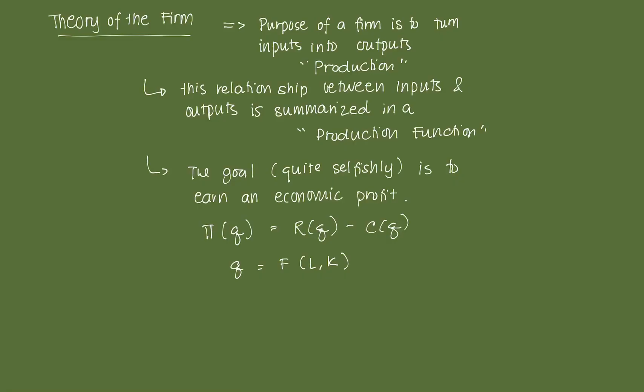The second key economic agent in microeconomics is the firm. The purpose of a firm is to turn inputs into outputs that would be distributed in the economy. We call the process by which the firm turns inputs into outputs production. So the primary process by which a firm transforms inputs into outputs is production in the theory of the firm.